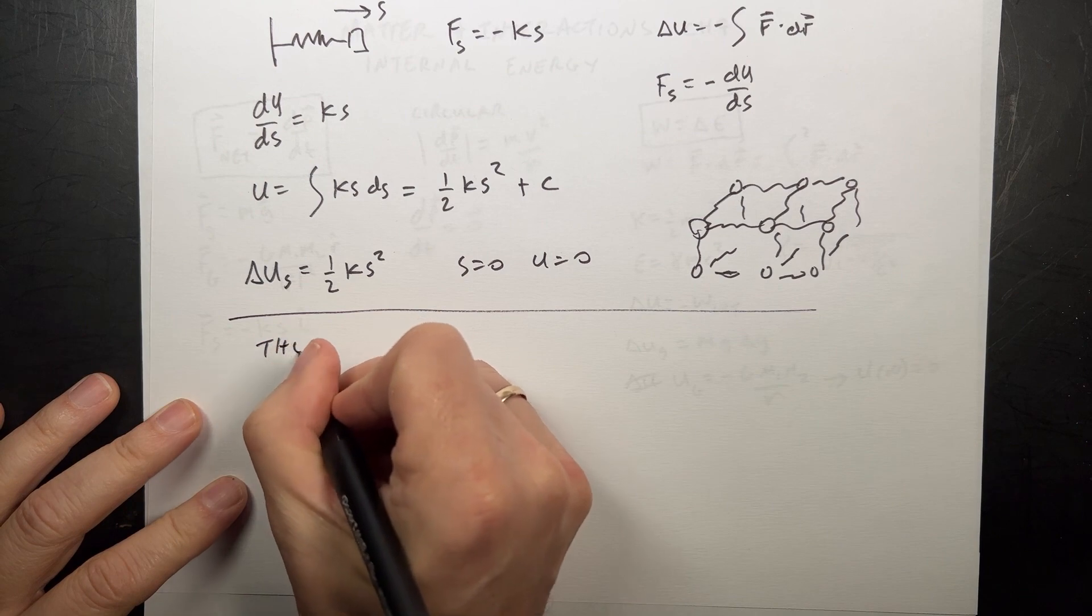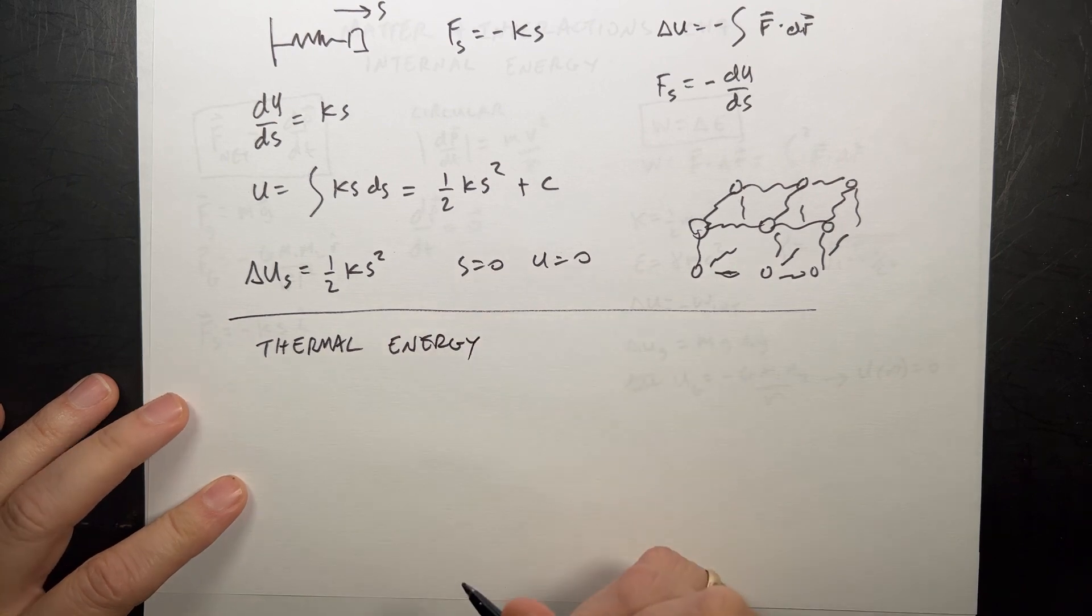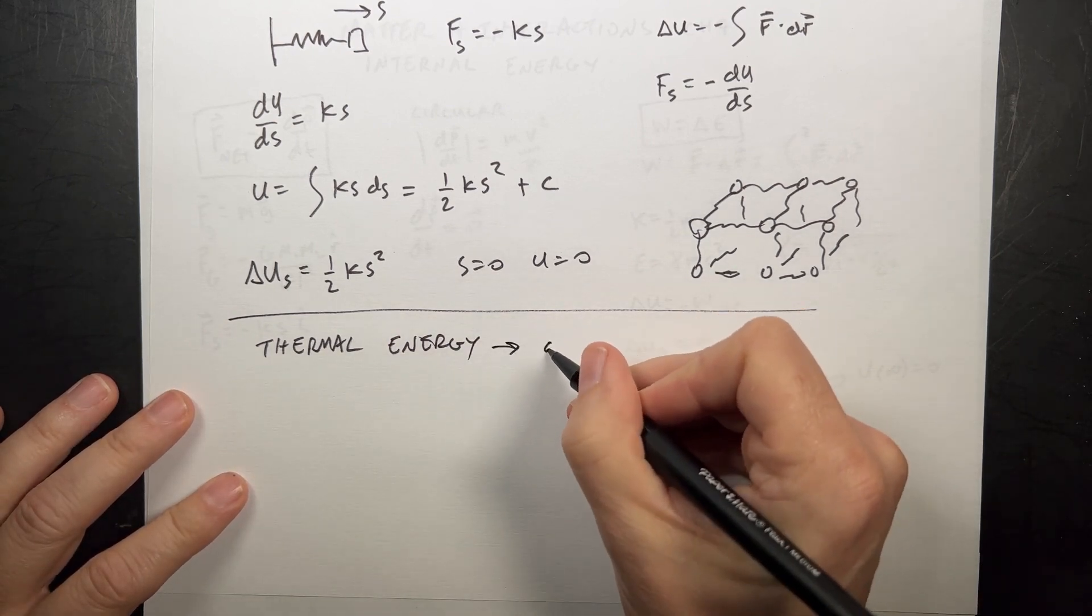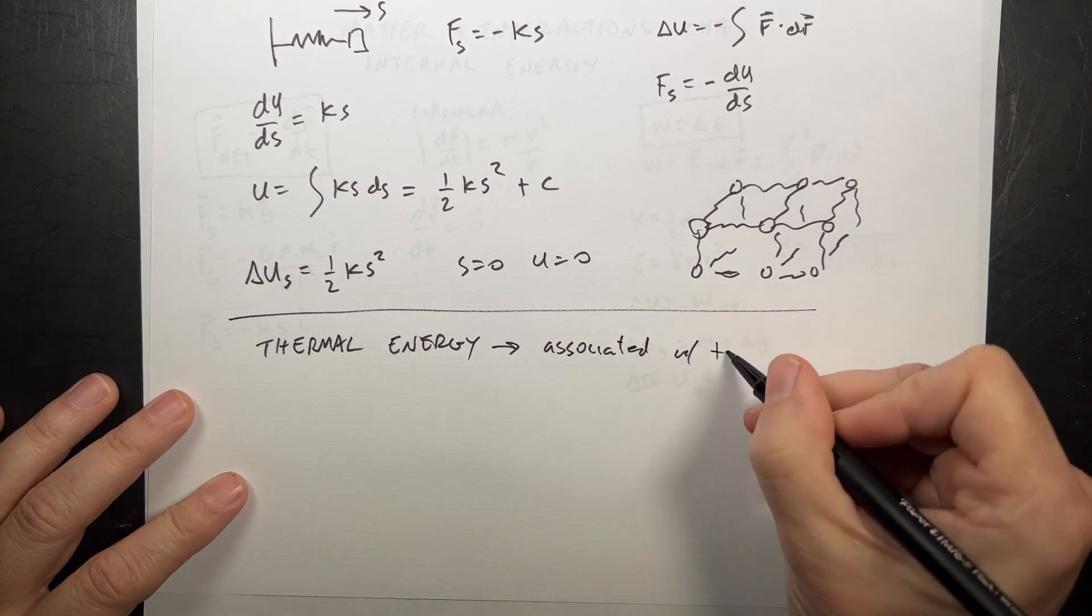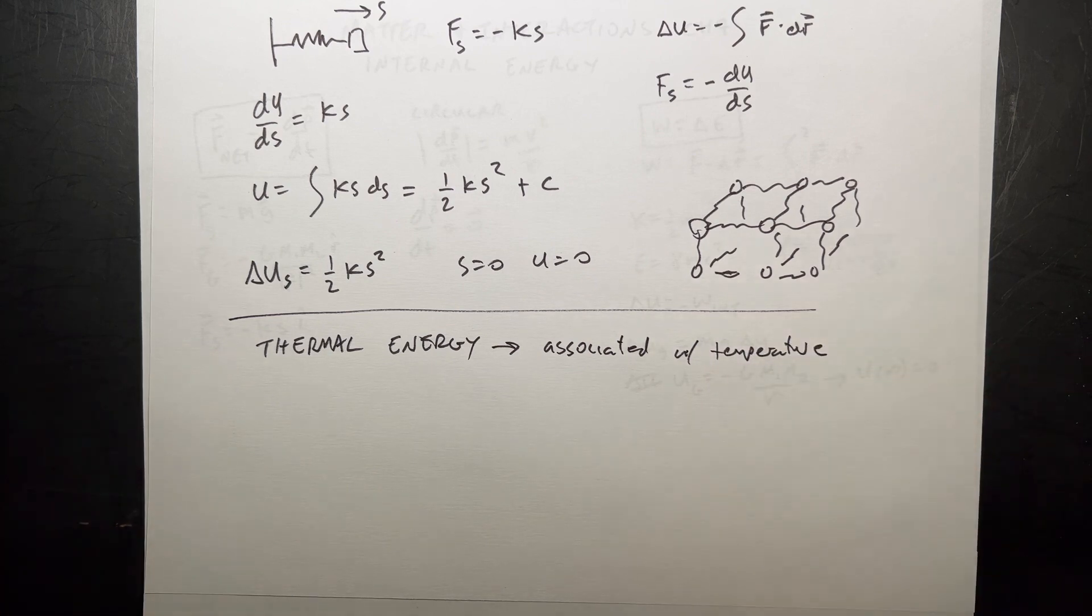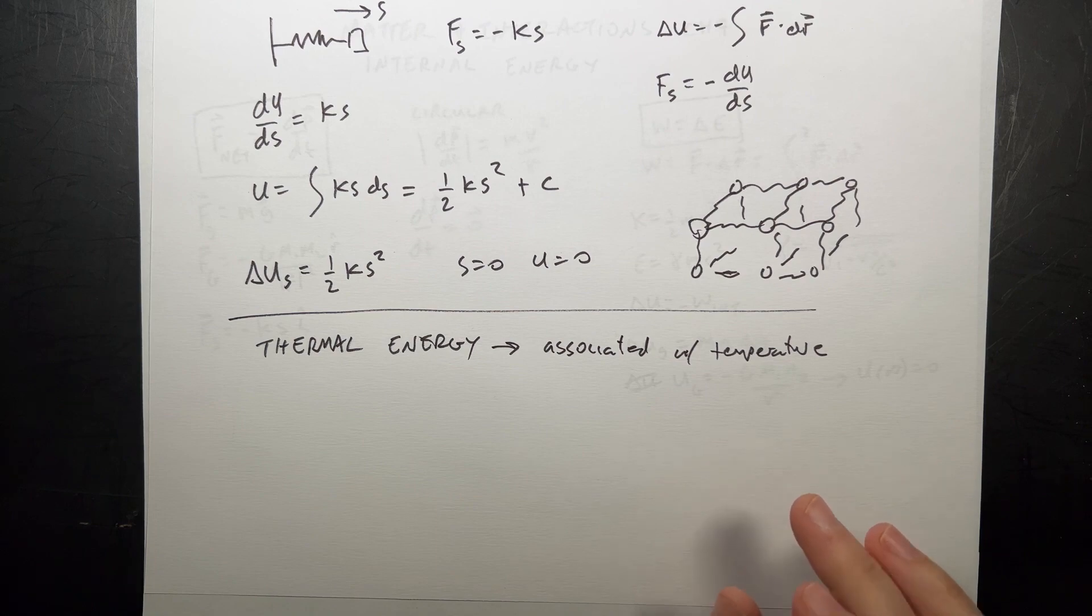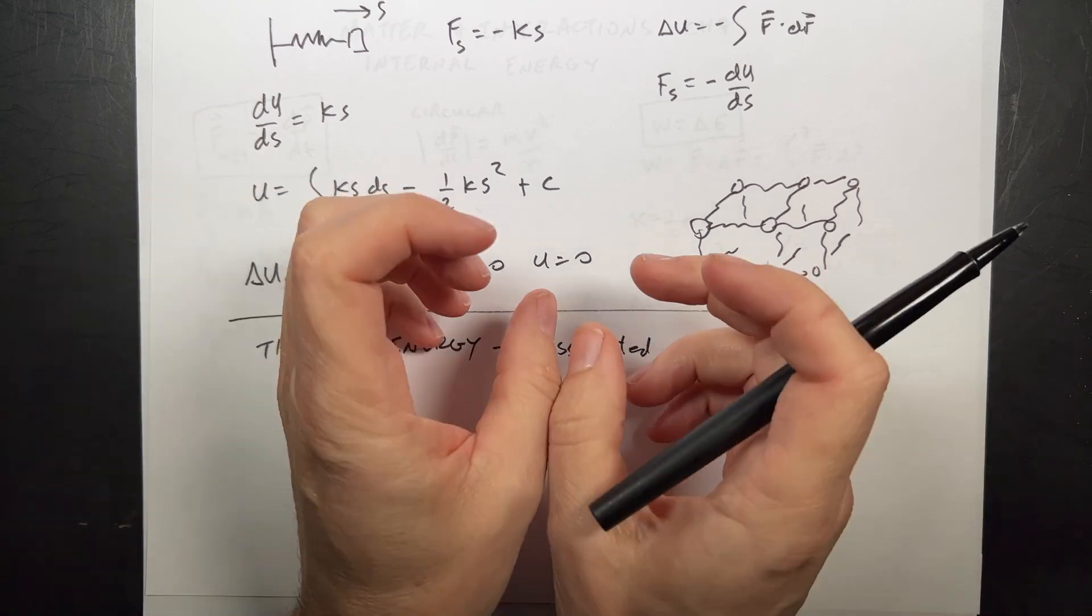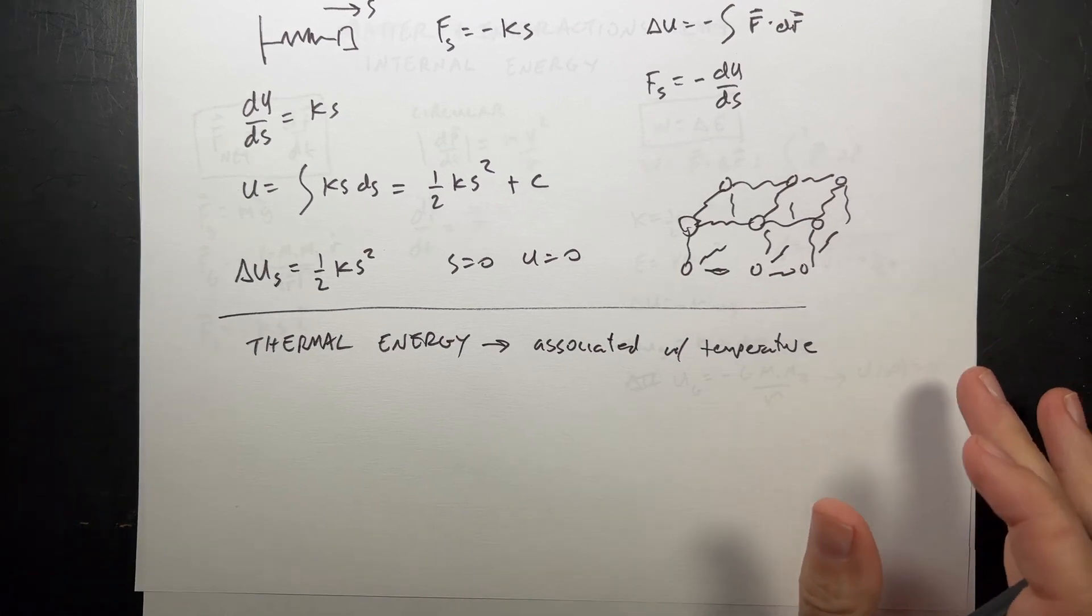We don't want to think about 10 to the 23rd particles in a block. It's just too many. So one way we deal with this is with thermal energy. This is the energy an object has associated with its temperature. What is temperature? Some people say temperature is the kinetic energy of the particles, and that's not completely true. Really, temperature is the property that two objects have in common when they're in contact. If you take a cold block and a warm block and put them in contact, they'll reach the same temperature eventually. That's actually how we define temperature. That's how a thermometer works.